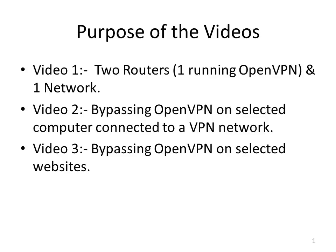Hello and welcome. This is one of three videos in a collection of tutorials about how you could use DD-WRT and achieve certain functions. I've noticed on the internet there are a lot of questions on how you can use VPN clients, how to connect two routers to create one network, how to bypass the VPN connected to a router on certain machines, and how to bypass the VPN on certain websites. These video tutorials are for a layperson and hopefully answer some of those questions, because there seem to be a lot of questions and very few answers.